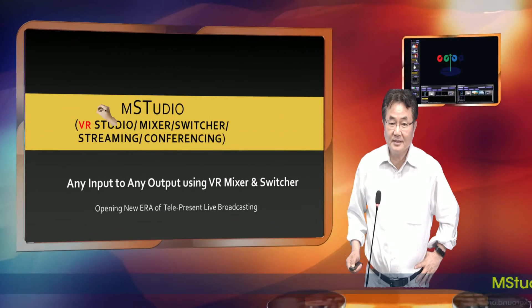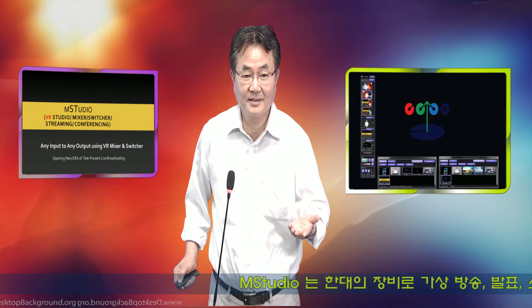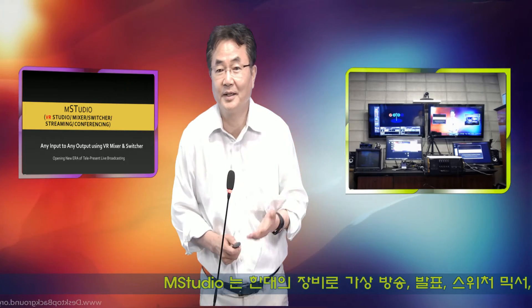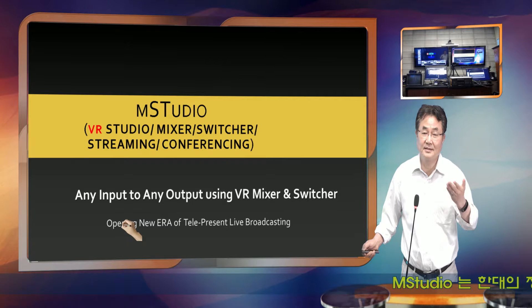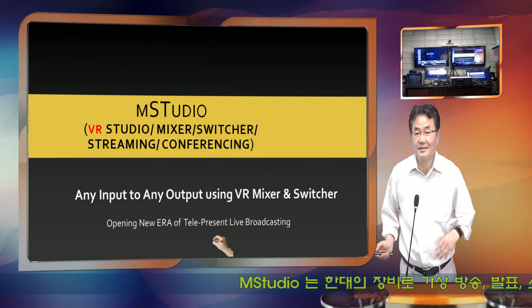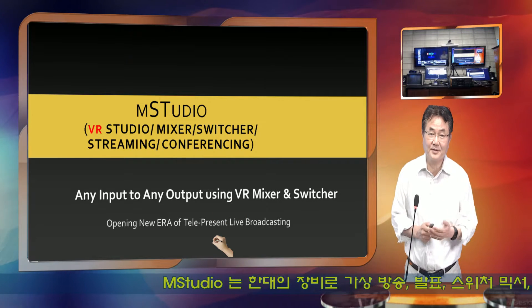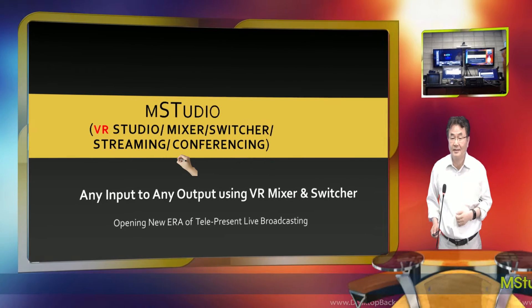This is any input. You have a monitor input, screen capture, and camera input. For example, I have a camera here, or I can go to PowerPoint and make a screen tool to show the environment I'm doing now. Any input — any monitor input, file, Skype, or whatever — you can show on the screen. So this is a VR mix and switcher. We call this telepresence because my presentation is actually better than you coming here to watch my live presentation. Remote presentation is anyway better.